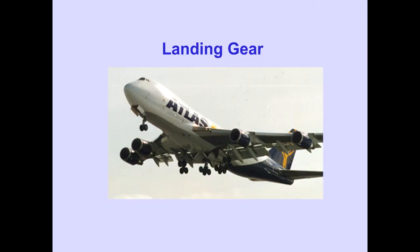The landing gear system consists of one nose gear with two wheels, two wing gear and two body gear with four wheels each.